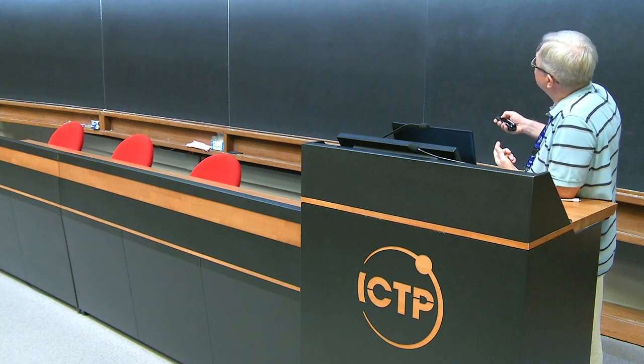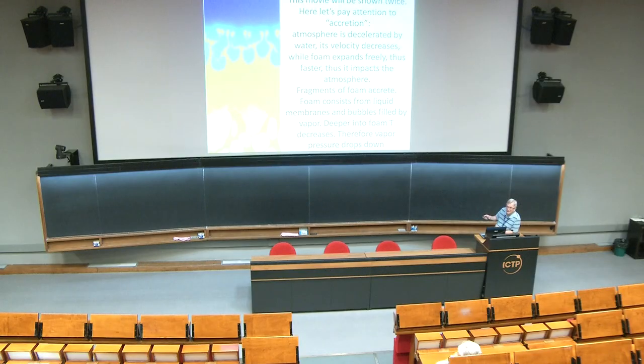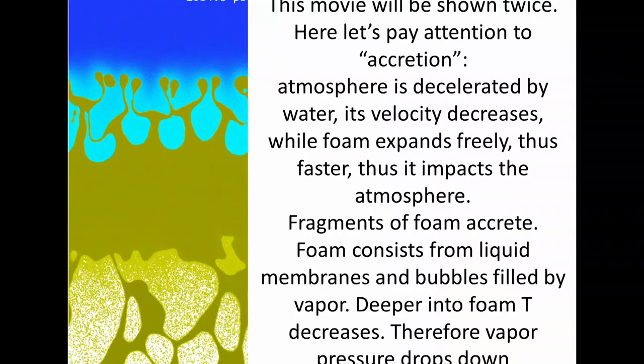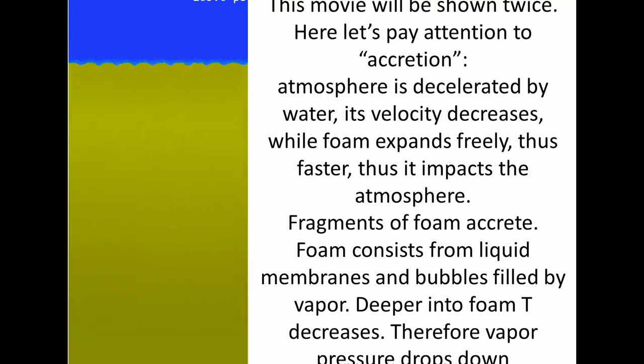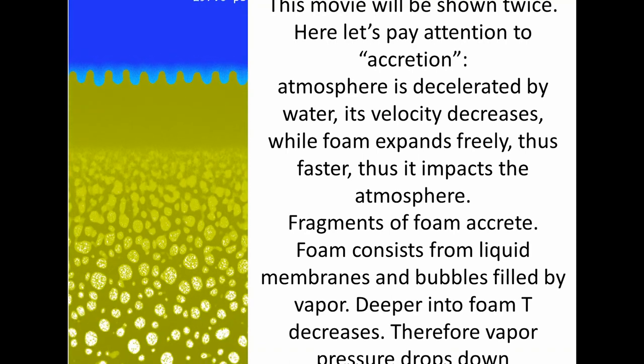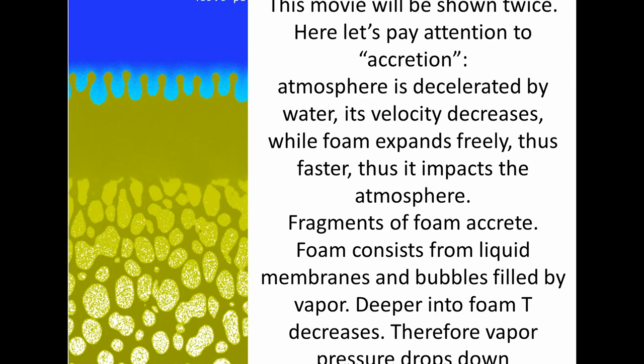And why I call this layer atmosphere? Because it is decelerated by water resistance to motion. Thus we have some effective gravity here. This effective gravity produces density and pressure drop in the atmosphere. Therefore pressure here is higher than here, and this pressure gradient decelerates the atmosphere.